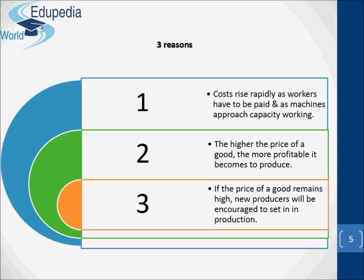The second reason is related to the fact that the higher the price of the good, the more profitable it becomes to produce. Firms will thus be encouraged to produce more of it by switching from producing less profitable goods. Finally, given time, if the price of a good remains high, new producers will be encouraged to set up in production. So total market supply thus rises.